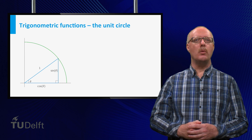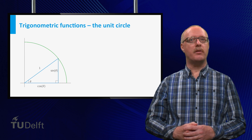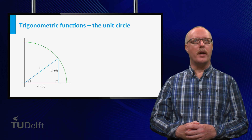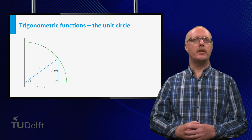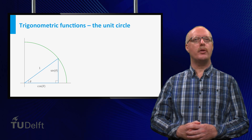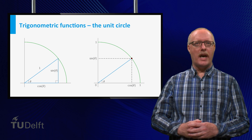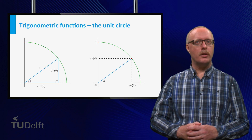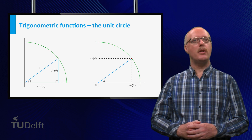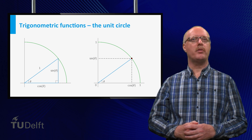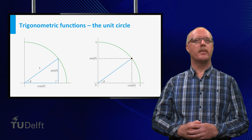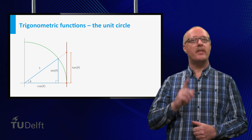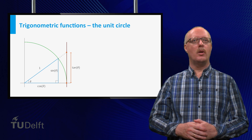Since the trigonometric functions only depend on the ratio of two sides of a rectangular triangle, we can draw this triangle inside a circle with radius 1, being the hypotenuse of the triangle. This circle is called the unit circle. Then for an acute angle theta, the value of the sine can be found at the vertical axis, and the value of the cosine at the horizontal axis. Both are positive for acute angles. The value of the tangent is the indicated height at the vertical line tangent to the circle, which explains its name.